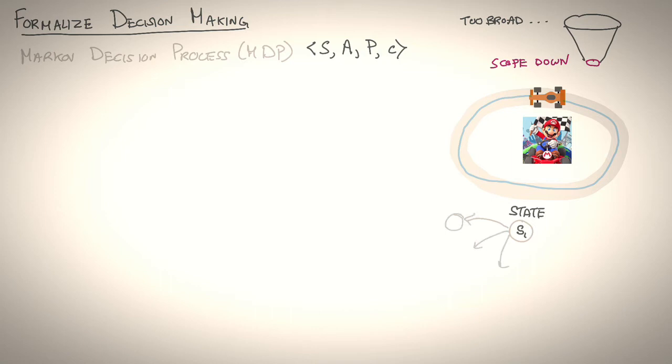At a given state, the robot can take many possible actions, for example, go straight, turn left, turn right, speed up, slow down, and so on. When it takes an action, it goes to a next state, where it takes another action and goes to another state, it keeps going, and so on, until it reaches the final state at the end of the finish line.